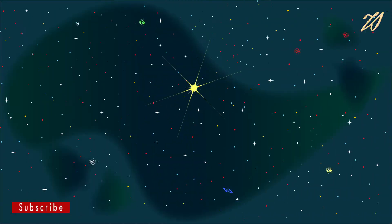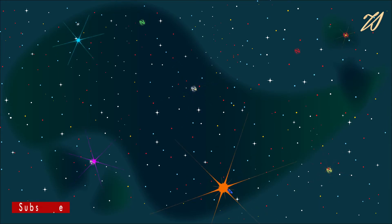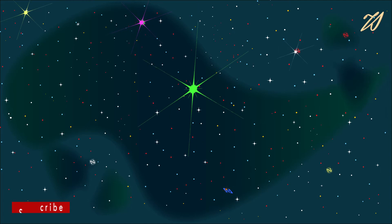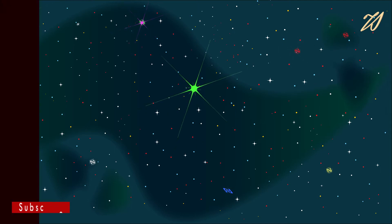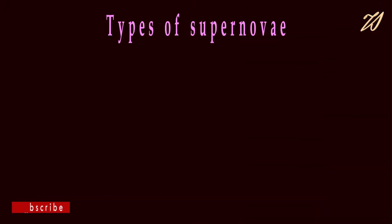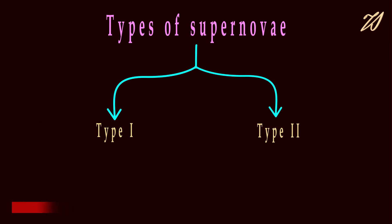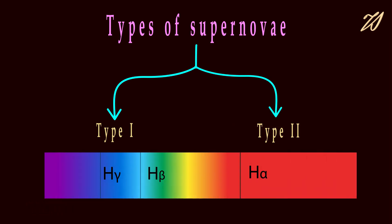Supernova is a spectacular and powerful explosion of a massive star at the end of its life. It can outshine the entire galaxy. Supernovae is the reason why we exist. There are mainly two types of supernovae — type 1 and type 2 — classified according to the nature of their spectrum.